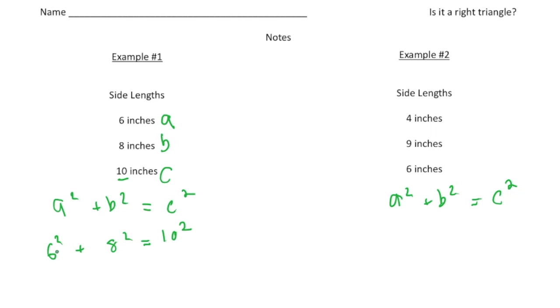Now let's simplify. So 6 squared is 36 plus 8 squared is 64 equals 100. And 36 plus 64 is indeed 100. So because 100 equals 100, I know for a fact that this, yes, is a right triangle.